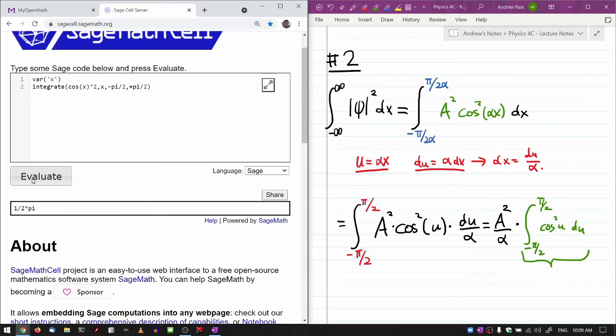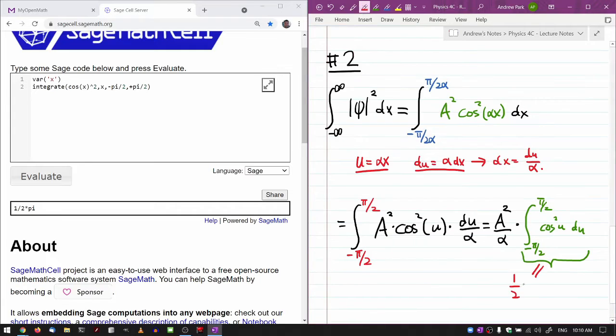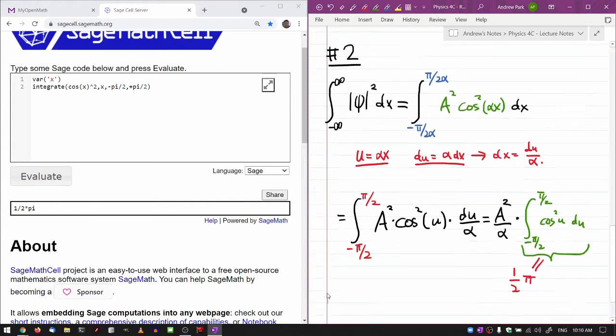Evaluate. And yeah, I figured it's going to get me something super simple. 1 over 2 pi. So if we had done this calculation in your graphing calculator, you would have gotten, I'm pretty sure that means 1 over 2 times pi is in the numerator. All right, so this is the expression you have for normalization condition.